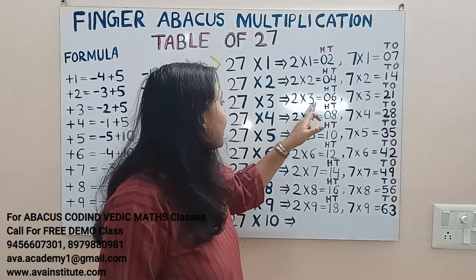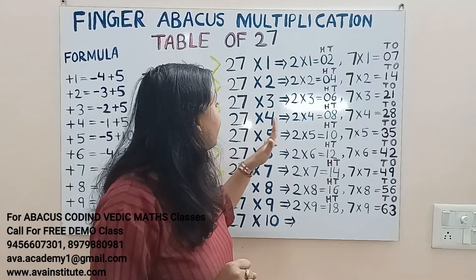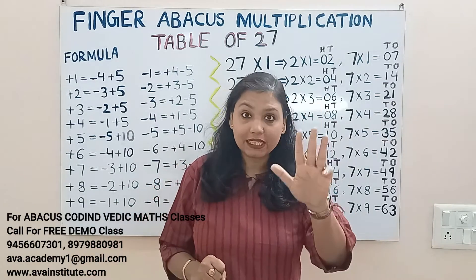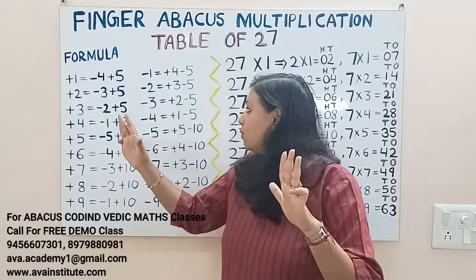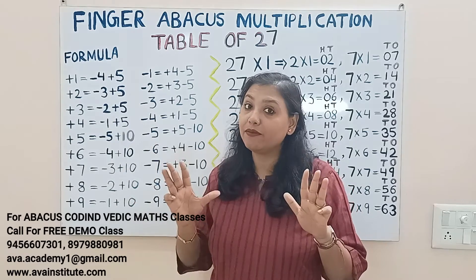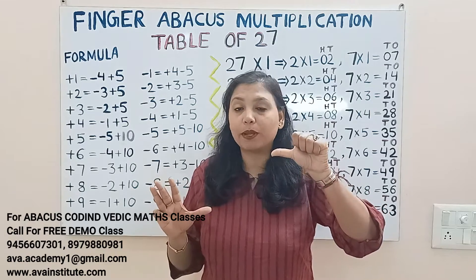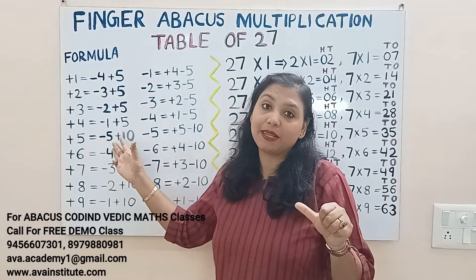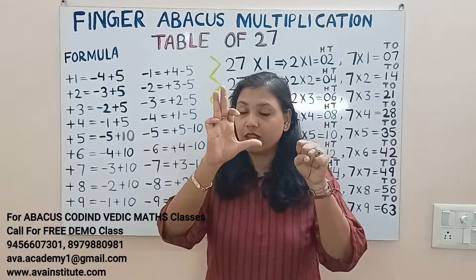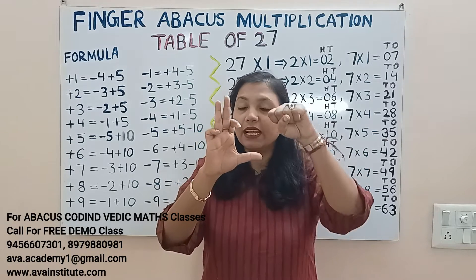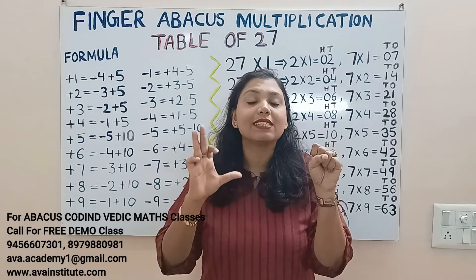27 fours: 2 fours are 8 — in hundreds 0, in tens 8. 7 fours are 28 — in tens 20, in ones 8. To add 20: plus 2 formula is minus 3 plus 5, so plus 20 formula is minus 30 plus 50. But plus 50 is not possible because 50 is already open, so plus 5 formula is minus 5 plus 10, meaning plus 50 formula is minus 50 plus 100. The answer is 108 — in hundreds 1, in tens 0, in ones 8.